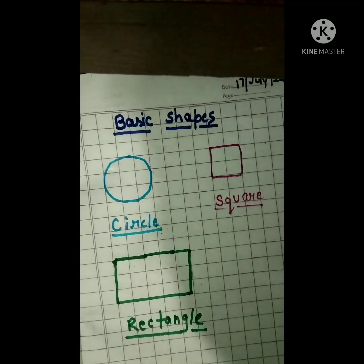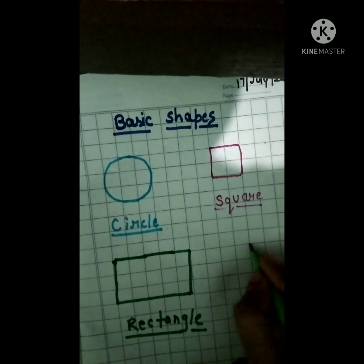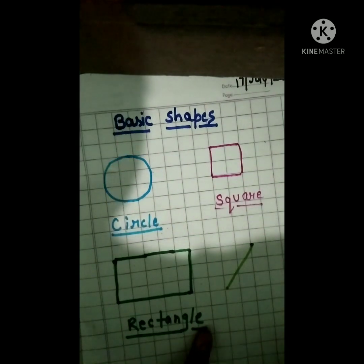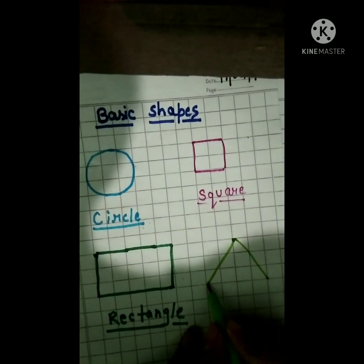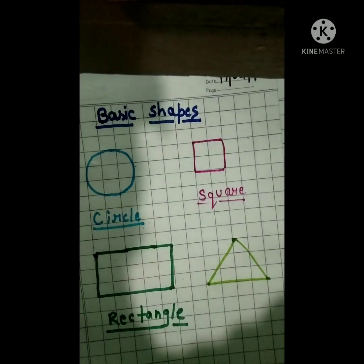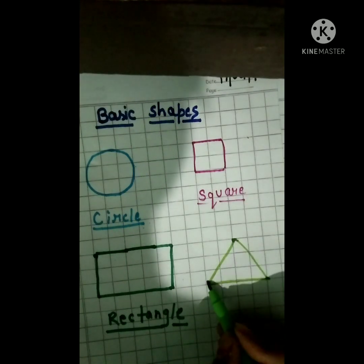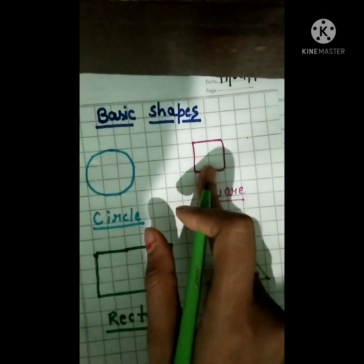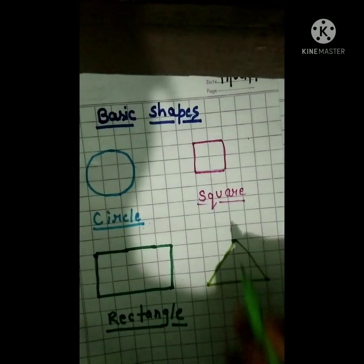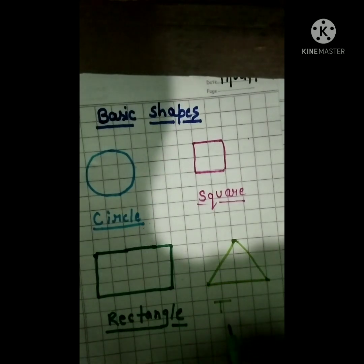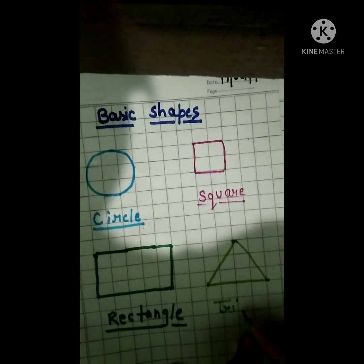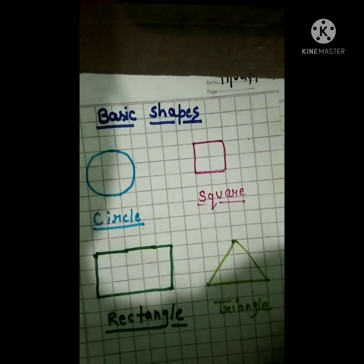And next shape is triangle. As we draw this type — a slanting line, and again draw a slanting line, and we draw a sleeping line. Because this is what? Triangle. In triangle there are three corners — one, two, three. T-R-I-A-N-G-L-E. Triangle.